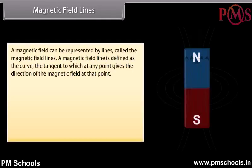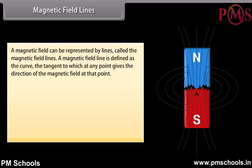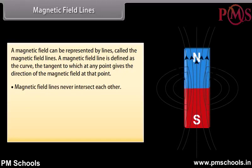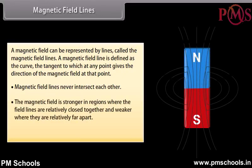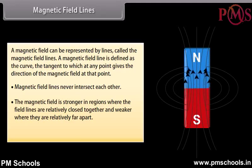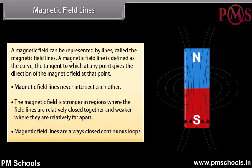Magnetic field lines: A magnetic field line is defined as the curve, the tangent to which at any point gives the direction of the magnetic field at that point. Magnetic field lines never intersect each other. The magnetic field is stronger in regions where the field lines are relatively close together, and weaker where they are relatively far apart. Magnetic field lines are always closed continuous loops.